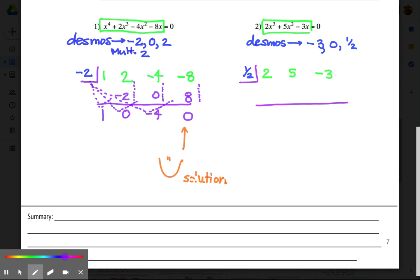And now here we go. Bring down the first number, two. Box times bottom, one half times two, bring it up, is one. Add going down is six. Box times bottom, bring it up. Add going down is zero. And just like the problem we just did, we have great news that zero tells us we have a solution.